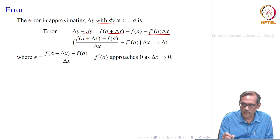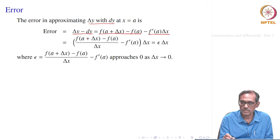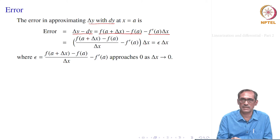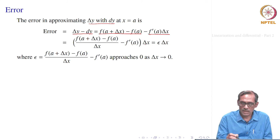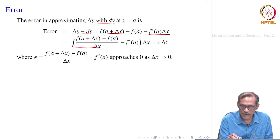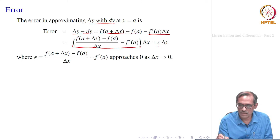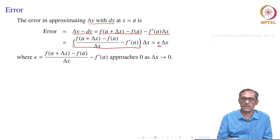We combine them together and find that it is equal to f of a plus delta x minus f of a divided by delta x, minus f prime of a, all times delta x. If we write this bracketed expression as epsilon, then the error is equal to epsilon times delta x.